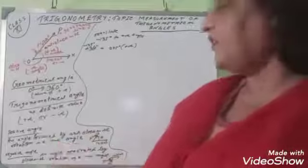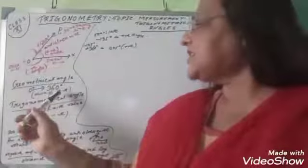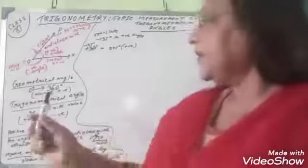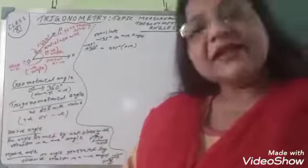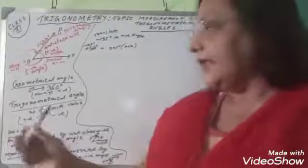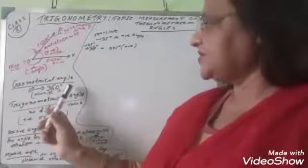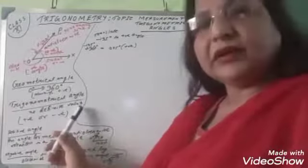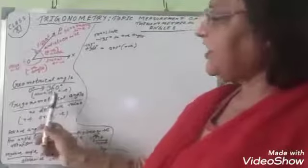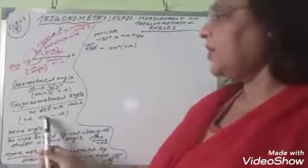The main differences are: a geometrical angle ranges from 0 to 360 degrees, while a trigonometrical angle has no definite value. Also, geometrical angles are always positive, but a trigonometrical angle may be positive or may be negative.